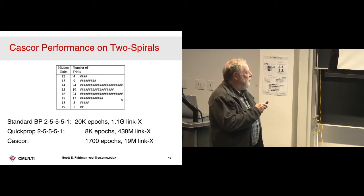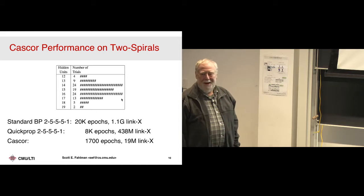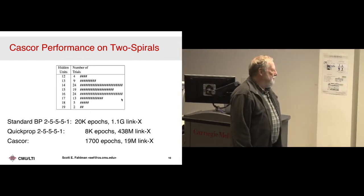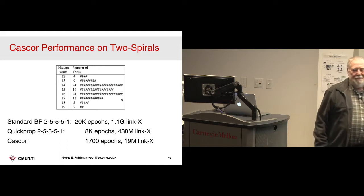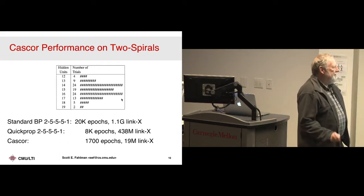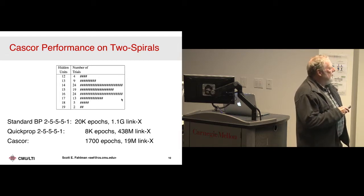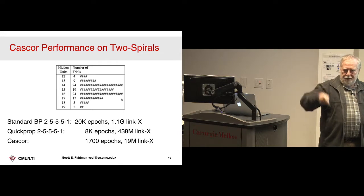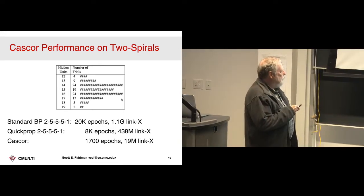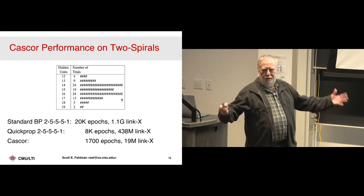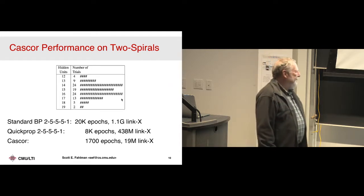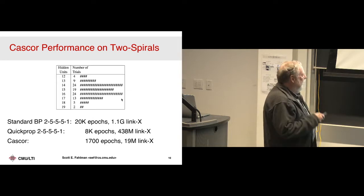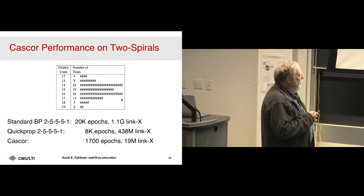Interestingly, it's easy in a cascade correlation net to see what the units are doing because there aren't so many of them, and they all have distinct jobs. These trials were taking half an hour each on the old hardware, and I was trying to run 50 trials. It was taking all night. The computers only stayed up for maybe a day and then Unix would crash. The best published result up to that point was standard BackProp with shortcut connections — a 2-5-5-5-1 network, huge by standards of the day.